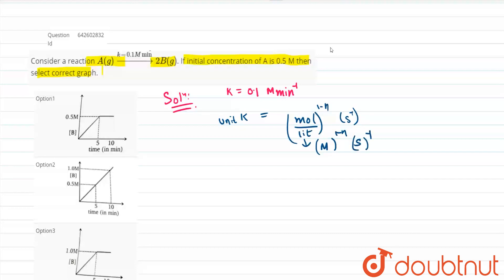Now friends we are given that the power of molarity is 1. Therefore we can deduce that 1 minus n equals 1. Therefore it implies that the value of n is 0, that is it is a zero order reaction. It is a zero order reaction.